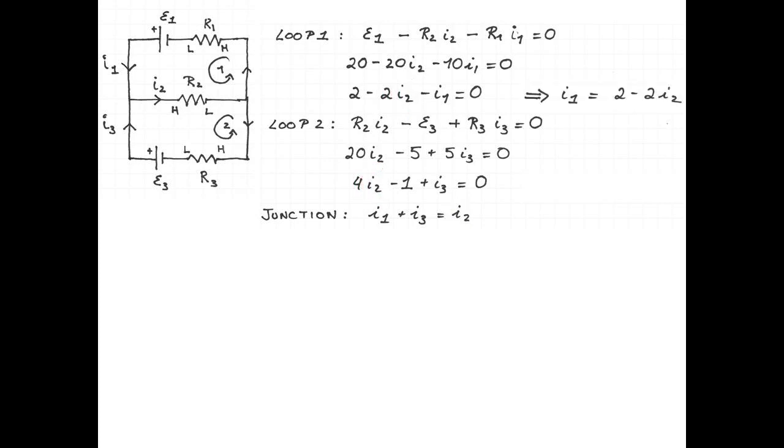So my first loop rule gives I1 is equal to 2 minus I2. My second loop rule gives I3 is equal to 1 minus 4I2. And then I replace into the junction rule. So I1 gets replaced by 2 minus 2I2. I3 gets replaced by 1 minus 4I2. And the sum of these is equal to I2. That simplifies to 3 is equal to 7I2. So I2 is 3 seventh of an ampere, approximately 0.429 amperes.